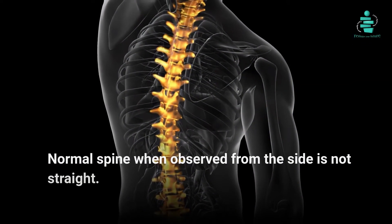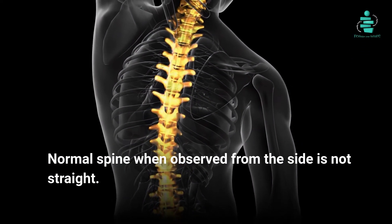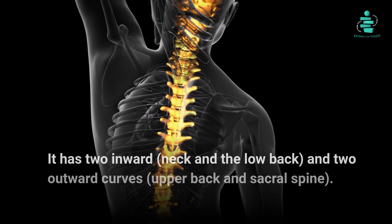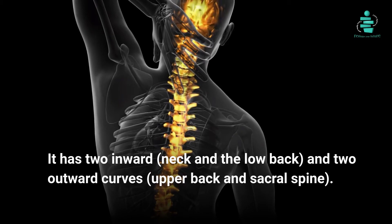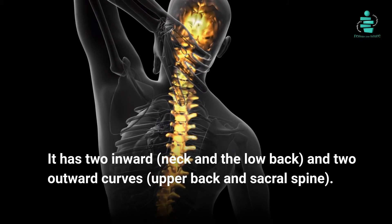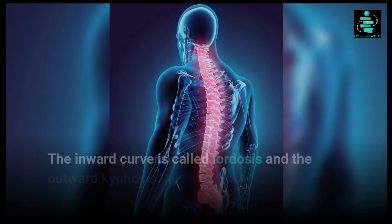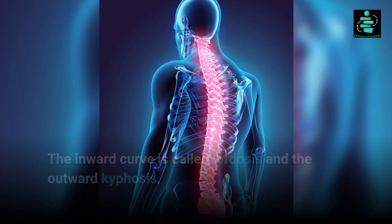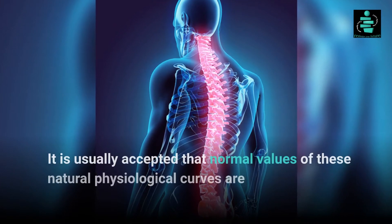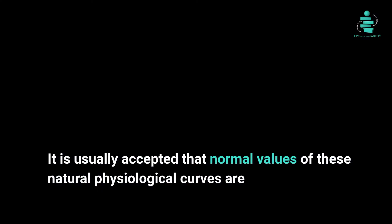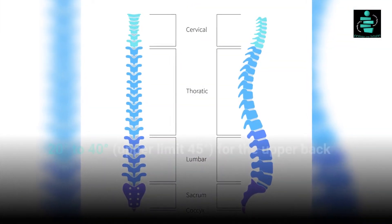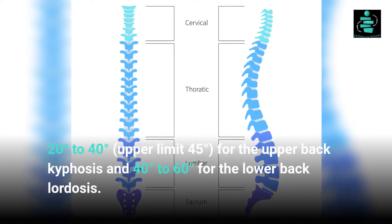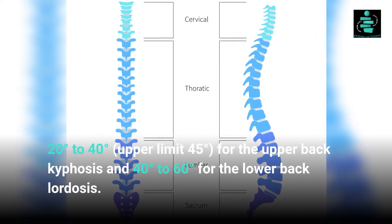The normal spine, when observed from the side, is not straight. It has two inward and two outward curves. The inward curve is called lordosis and the outward kyphosis. It is usually accepted that normal values of these natural physiological curves are 20 to 40 degrees upper limit, 45 degrees for the upper back kyphosis, and 40 to 60 degrees for the lower back lordosis.